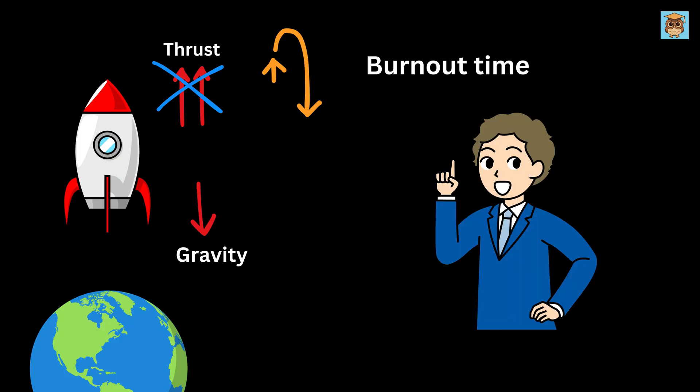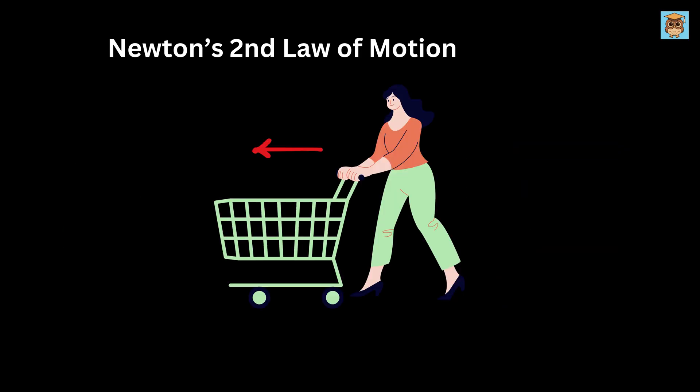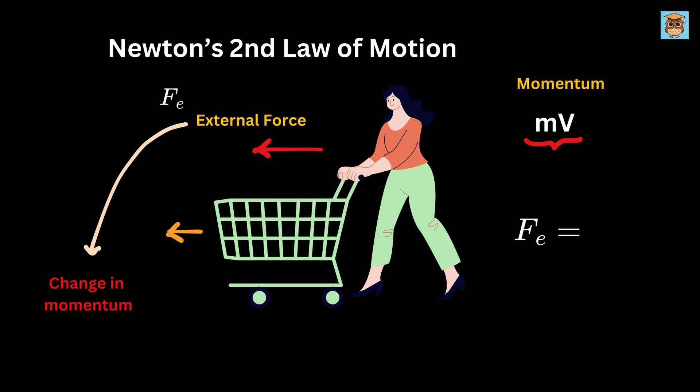Finally, we need to understand one more concept of physics, which is none other than Newton's second law of motion, and we can then start to build our mathematical model. Imagine you're pushing a shopping cart. When you push the cart, which means when you apply external force, the cart's motion changes. It speeds up or slows down depending on how hard you shove it. This change in motion combined with how heavy the cart is is called a change in momentum. Newton's second law simply says that the force you apply is equal to how quickly the momentum changes. Momentum is just mass times velocity. Mathematically, the external force Fe equals change in momentum delta P divided by change in time delta t.